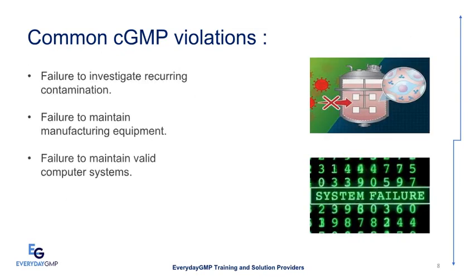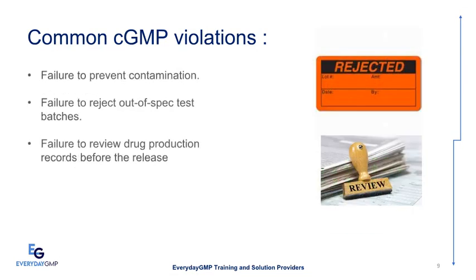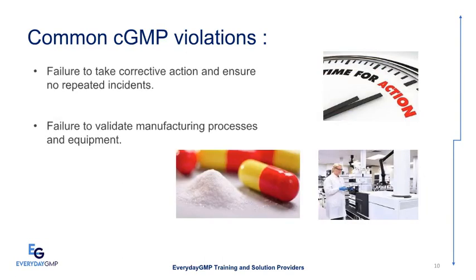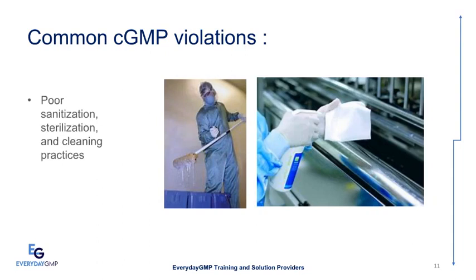Further violations include: failure to investigate out-of-specification batches, failure to investigate recurring contamination, failure to maintain manufacturing equipment, failure to maintain valid computer systems, failure to prevent contamination, failure to reject out-of-spec test batches, and poor sanitization, sterilization, and cleaning practices.